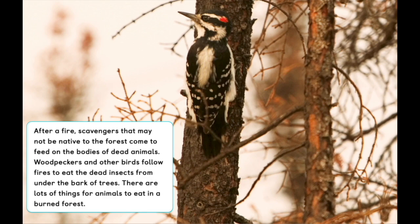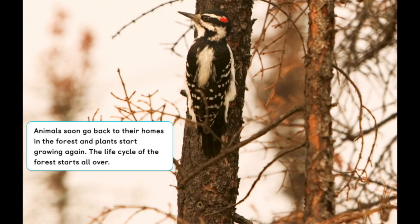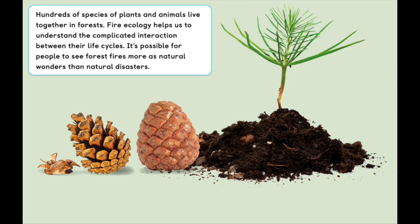There are lots of things for animals to eat in a burned forest. Animals soon go back to their homes in the forest, and plants start growing again. The life cycle of the forest starts all over. Hundreds of species of plants and animals live together in forests. Fire ecology helps us to understand the complicated interaction between their life cycles. It's possible for people to see forest fires more as natural wonders than natural disasters.